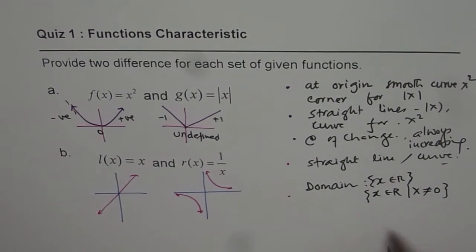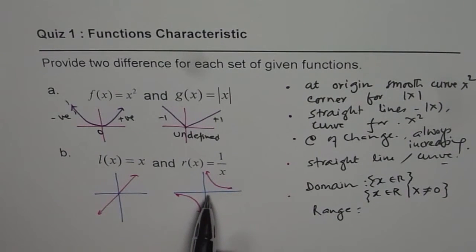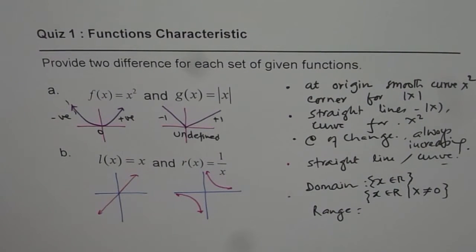For one over x, the reciprocal function. So these are, you could also say range. Now range is restricted, since it is not equal to zero for the reciprocal function. So those are the differences which you can highlight.